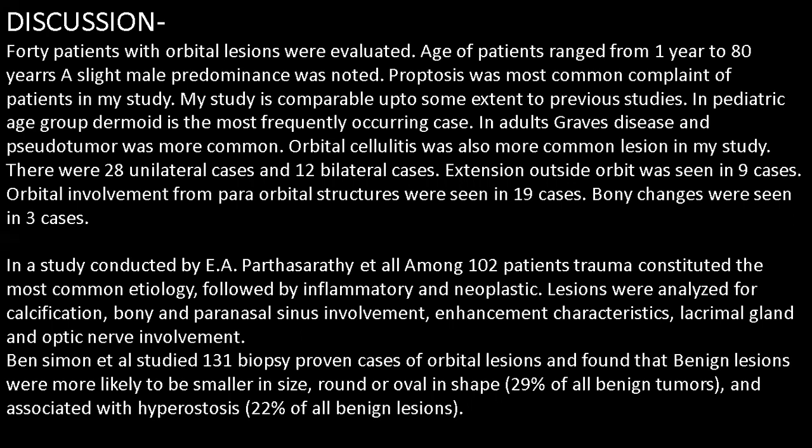Enhancement characteristics, lacrimal gland, and optic nerve involvement were also assessed. Ben Simon et al. studied 131 biopsy-proven cases of orbital lesions and found that benign lesions were more likely to be smaller in size, round or oval, constituting 29% of all benign tumors, and associated with hyperostosis, accounting for 22% of all benign lesions.